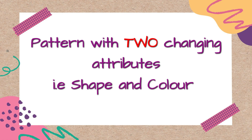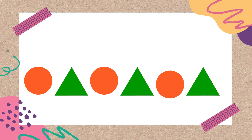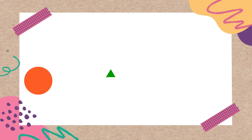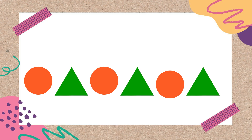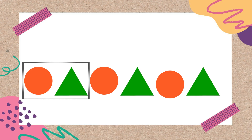Let's have an example of a pattern with two changing attributes — that is color and shape. You can see here in this pattern, color as well as shape are both changing. Let's read the pattern: red circle, green triangle, red circle, green triangle.